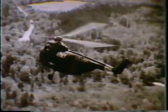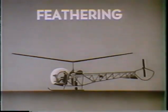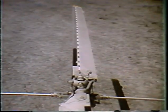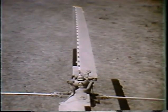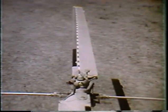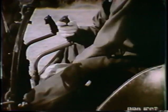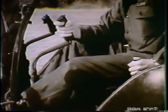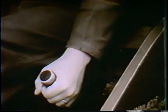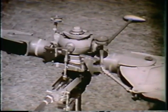Any movement of the helicopter, either vertical or horizontal, is accomplished through feathering. Feathering includes any movement of the blade around its span-wise axis, as indicated by the dotted line. Such movement alters the angle of incidence — or pitch angle — of the blade, and changes the amount of lift which the blade will produce. Feathering is accomplished through either the collective pitch control or the cyclic control. Any change in the collective pitch changes the pitch of each blade of the rotor by the same amount through its complete revolution.